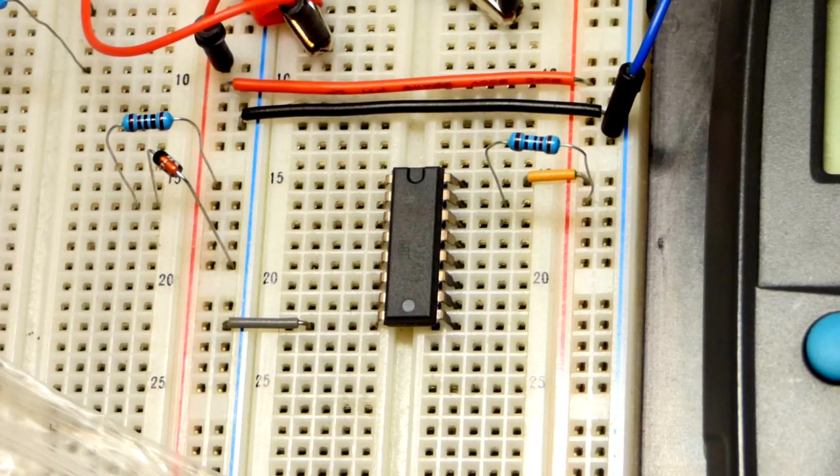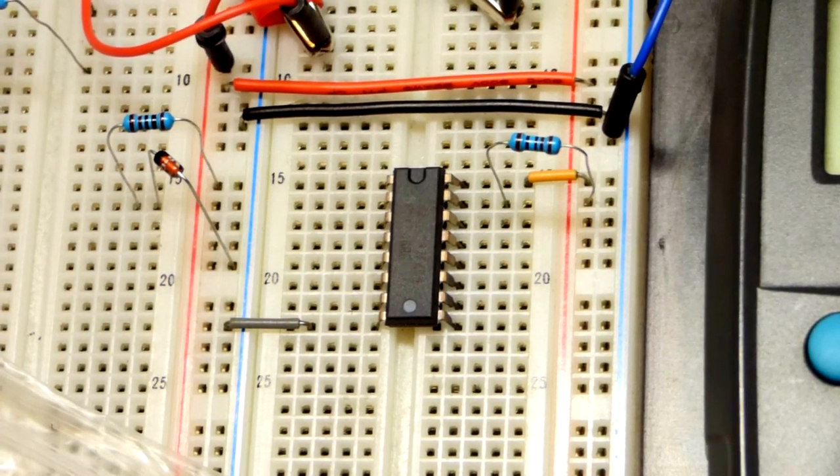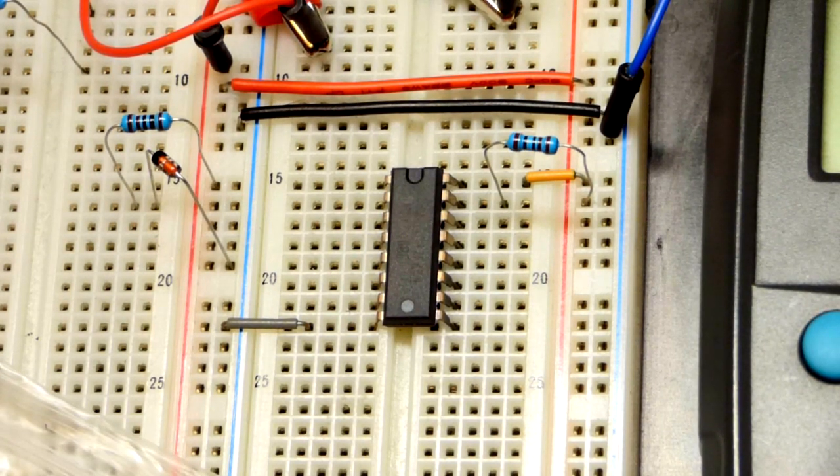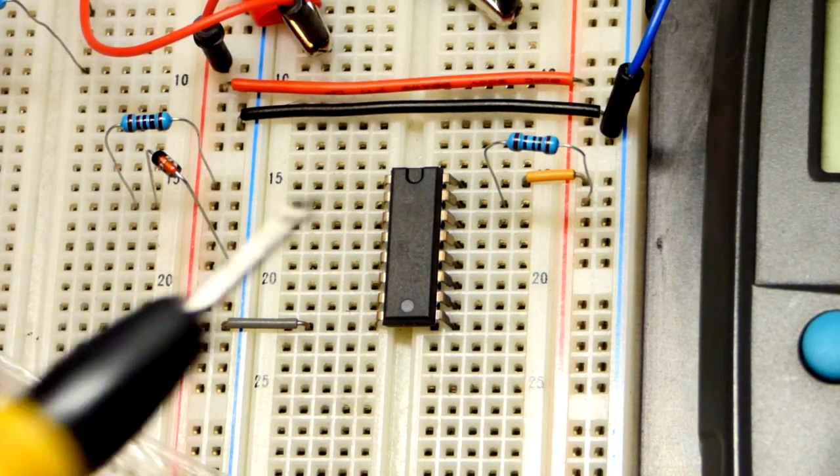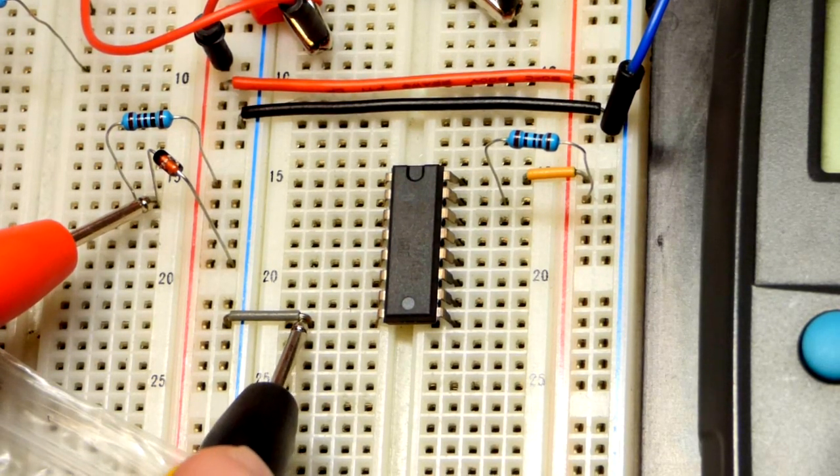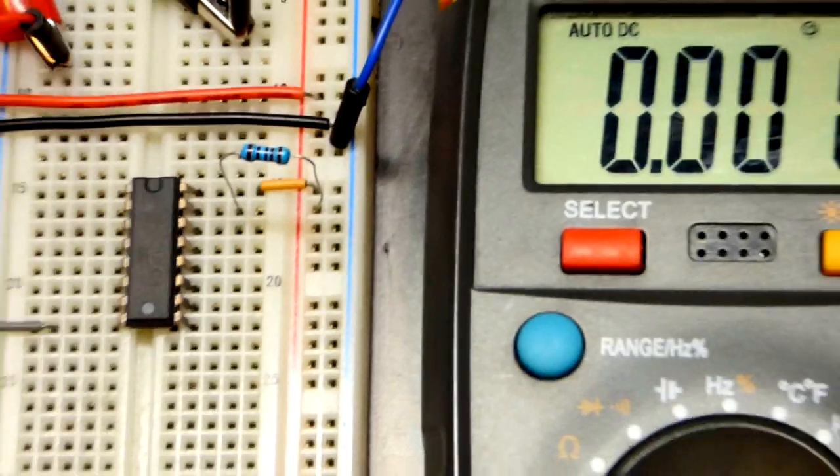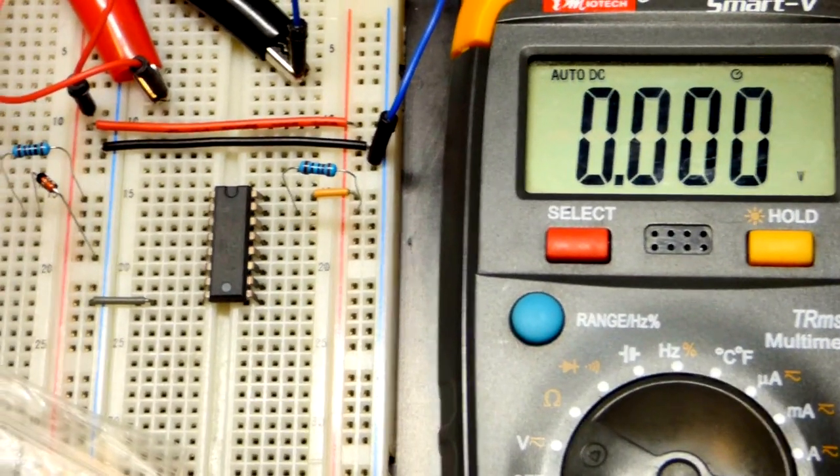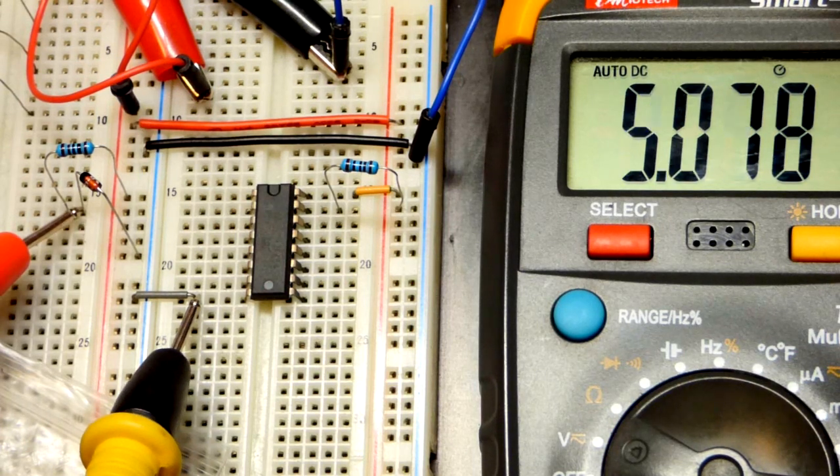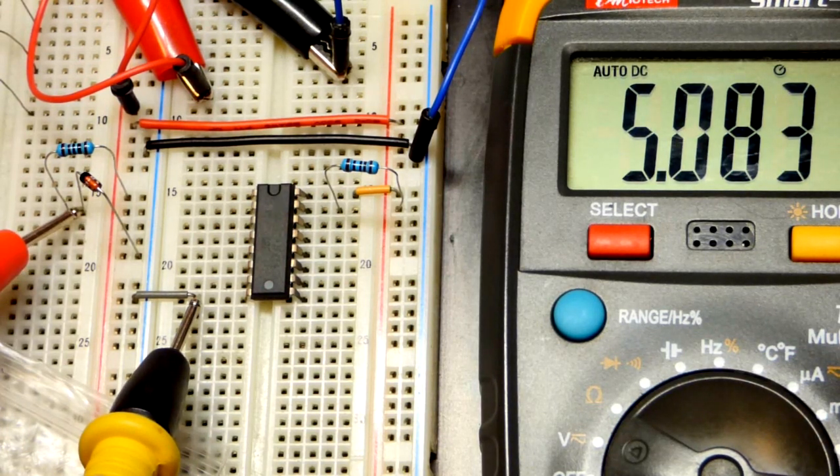In any case, bench power supply is set to 10 volts right now. I have one kilo ohm resistors to each of these zener diodes and you can see that this one is 5.1, basically there, just a tad below.